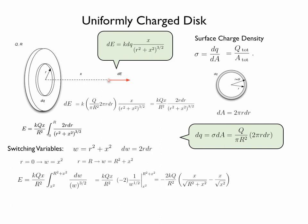Evaluating at the limits, the electric field must be equal to minus 2kQ over big R squared, times x over the square root of R squared plus x squared, minus x over the square root of x squared. That last expression can be simplified if we consider that x cannot be negative in value.